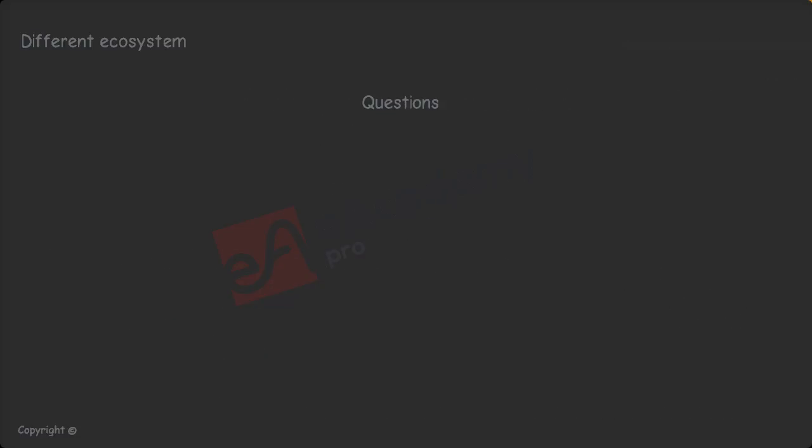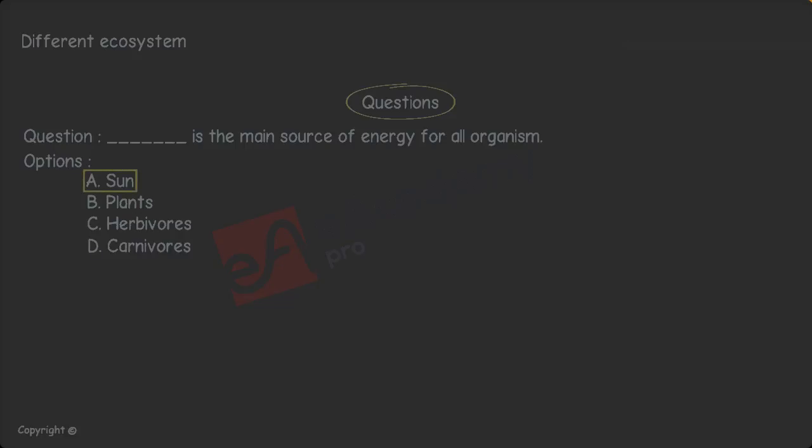Let us discuss some questions. 1. Dash is the main source of energy for all organisms. The options are A. Sun, B. Plants, C. Herbivores, D. Carnivores. The correct answer is option A. Sun.